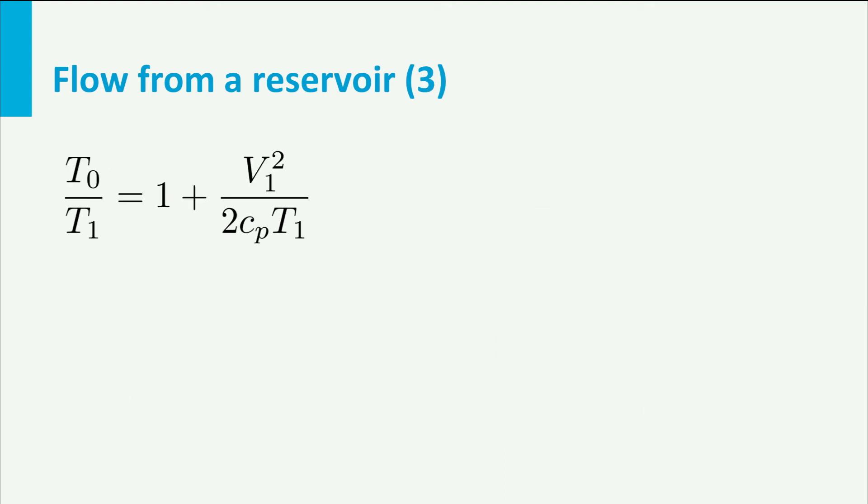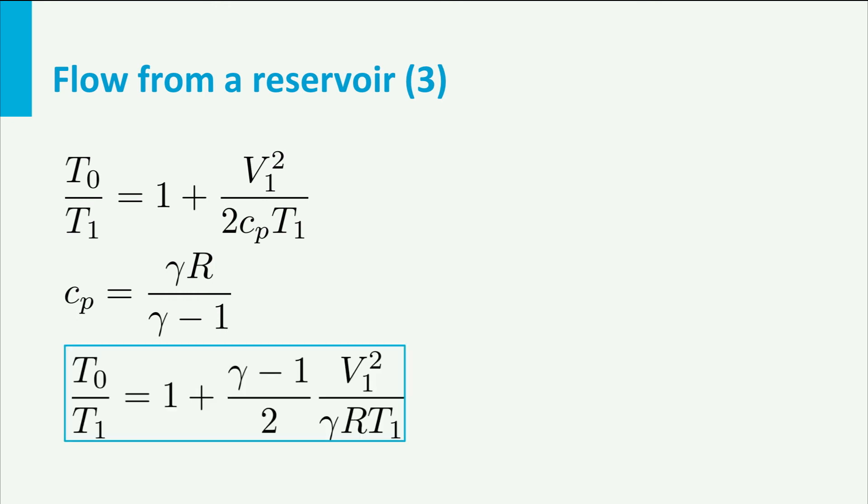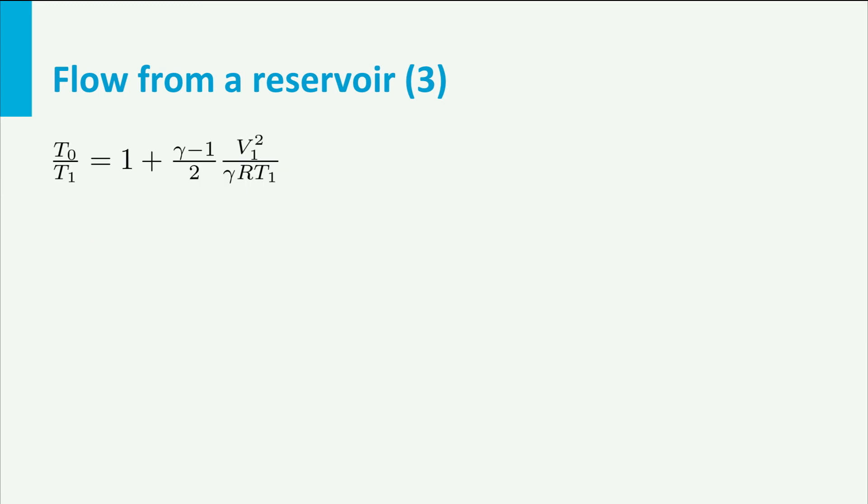Now let's go back to the energy equation, T0 over T1 is 1 plus V1 squared over 2 times CPT1. When we replace CP by the expression we just found, it follows that T0 over T1 is 1 plus gamma minus 1 divided by 2 times V1 squared divided by gamma RT1. Now, maybe you recognize that here we have A1 squared. So basically what we found is that T0 over T1 is 1 plus gamma minus 1 divided by 2 times M1 squared.